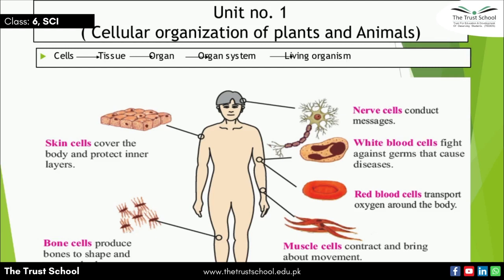As you know, the cell is the very basic functional and structural unit of a living organism. When the same type of cells work together, they make a tissue. When tissues work together, they make an organ. When more than one organ works together, they make an organ system, and hence a living organism is made.